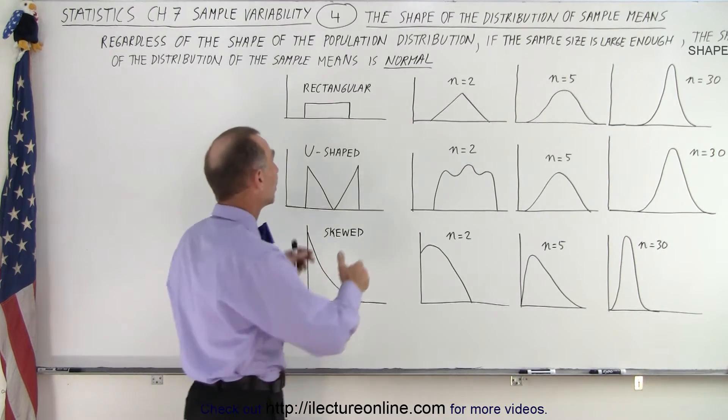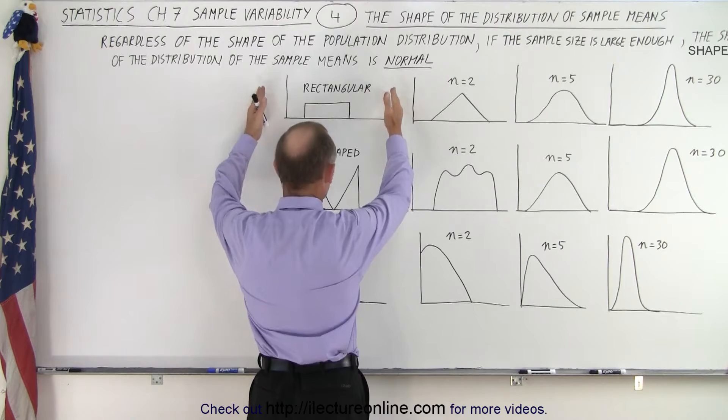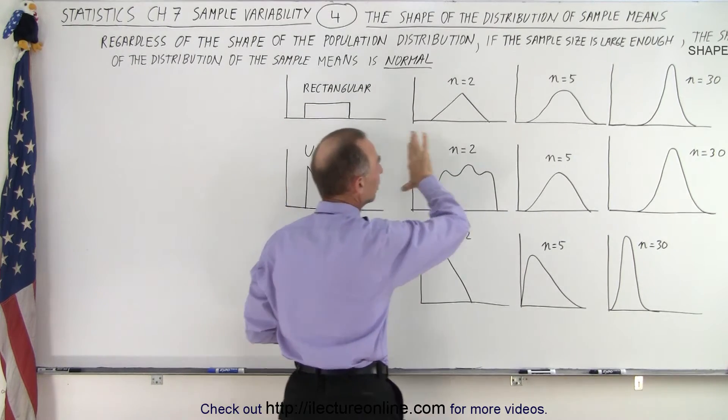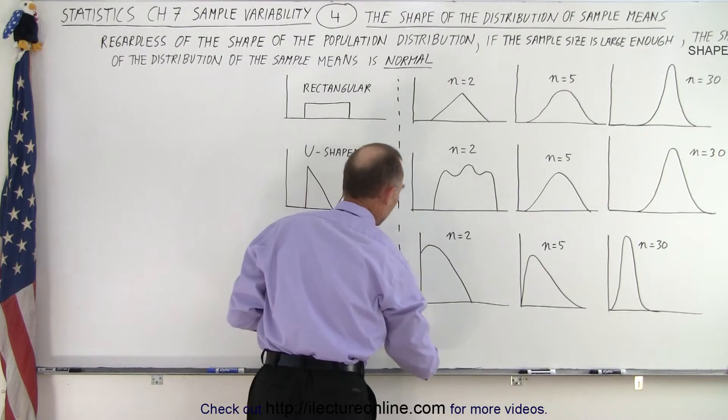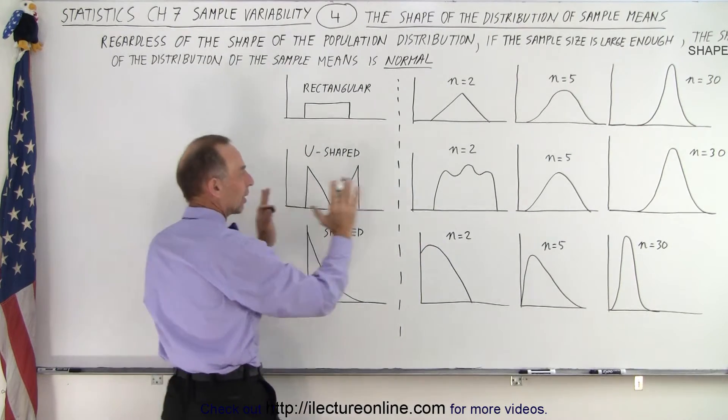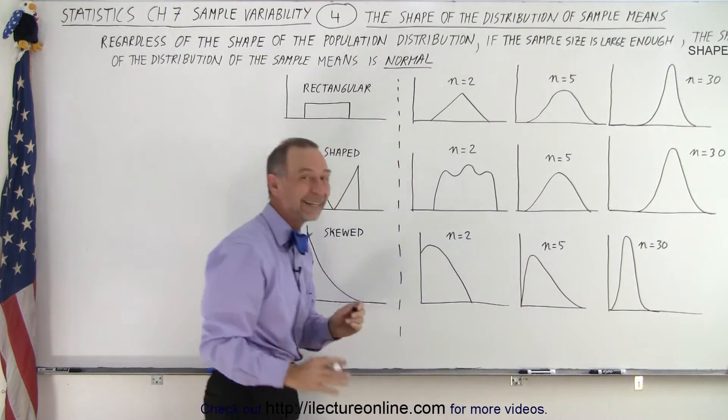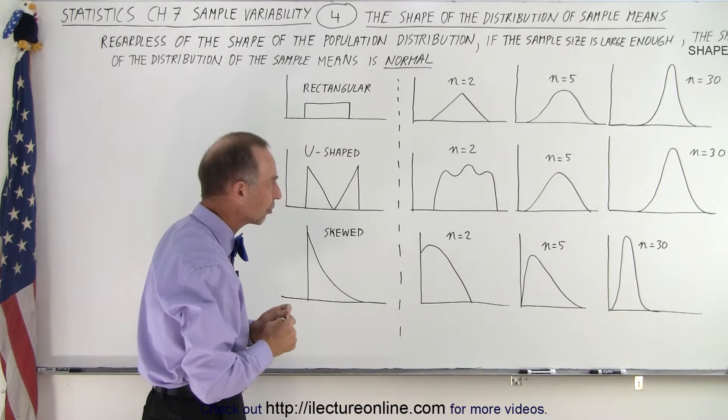Notice that we have a rectangular population. These are population curves, and these are the sample curves, so maybe I'll put a dotted line in between. On the left side we're dealing with populations, on the right side we're dealing with distributions of the sample means, the averages of the samples.